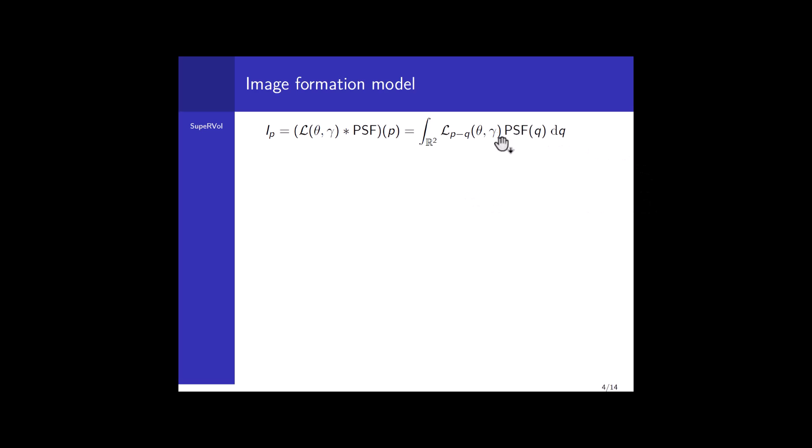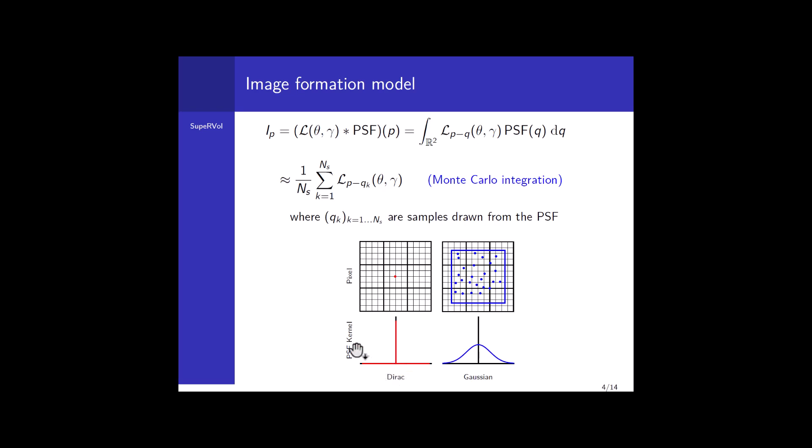The point spread function was shown to be properly approximated using a Gaussian, and we use Monte Carlo integration to approximate this convolution. We basically consider a certain amount of random samples drawn from the PSF itself. This model can be seen as a generalization of the previous simple model. Indeed, the PSF can be considered as a Dirac distribution, and in this case we end up with the previous model.